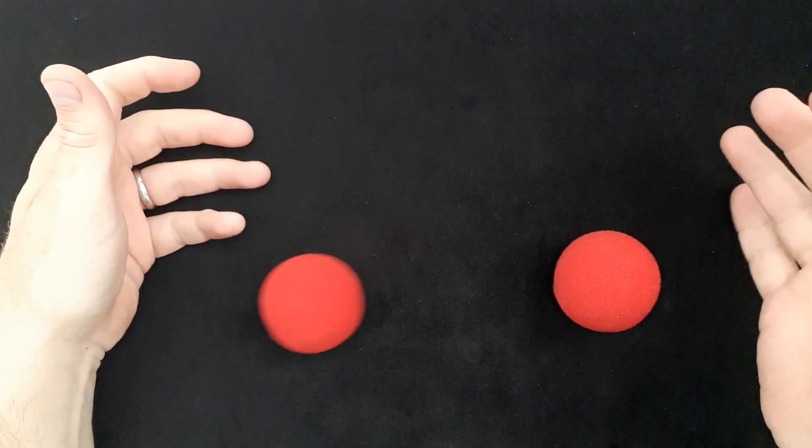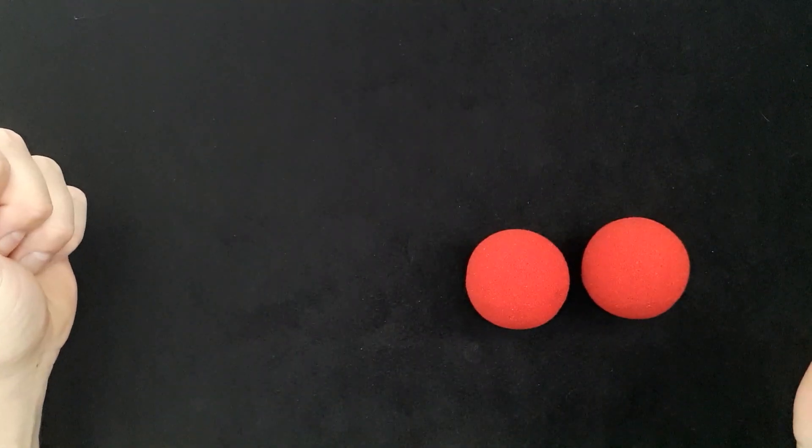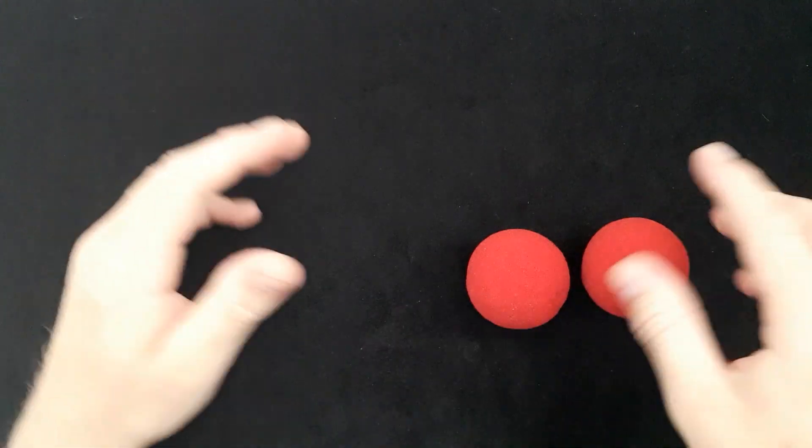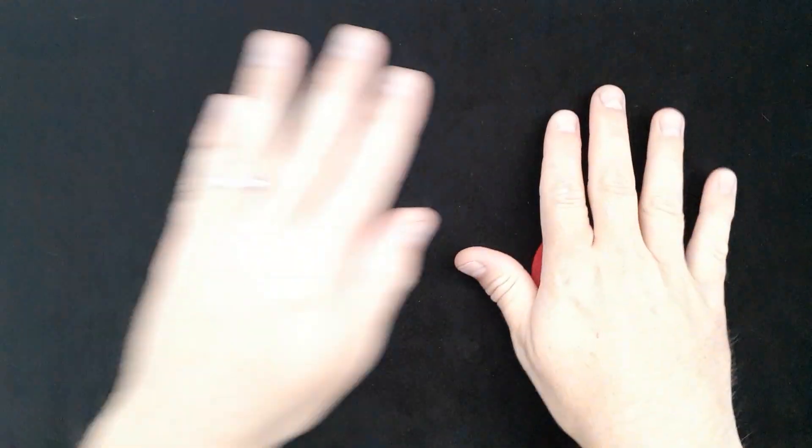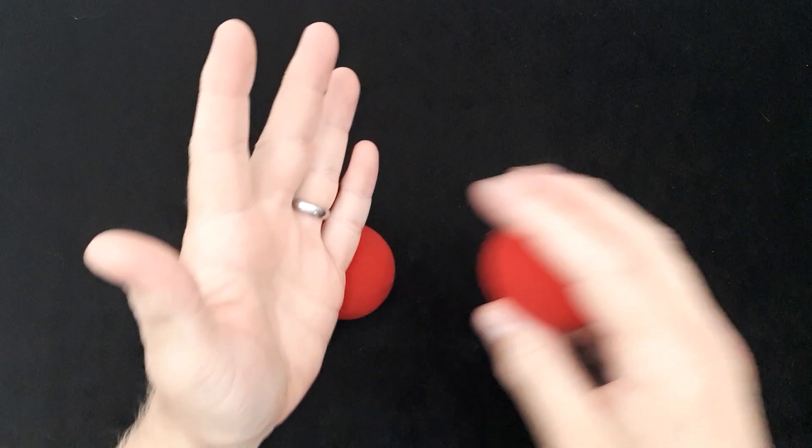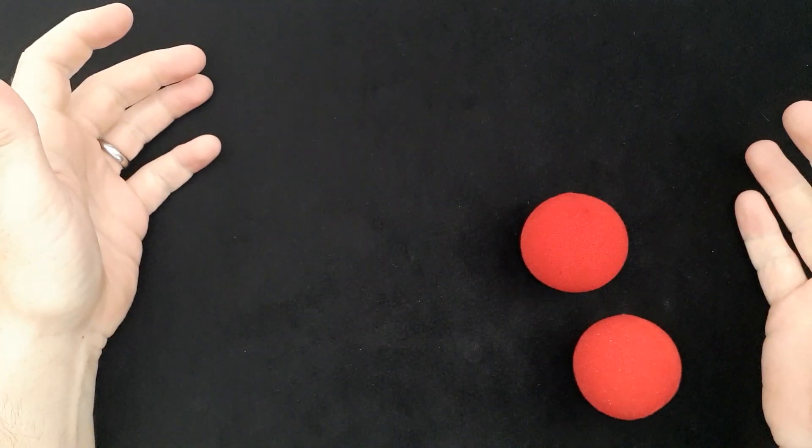And then you will magically have a ball jump from one hand to another. So I'll just take it one more time. So it's one, two, three, four. Place it in, pick up the second ball, and then it jumps over. There you go.